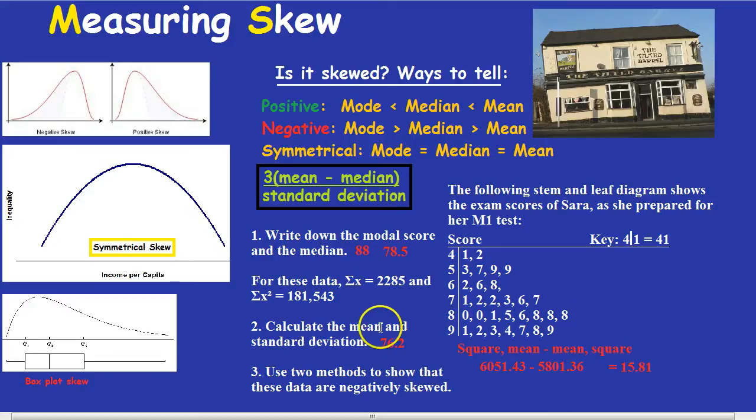Okay, almost there. We've calculated the mean and the standard deviation. That was good practice. Use two methods to show that these data are negatively skewed. First, we can just visually see it, but that wouldn't count as a quantitative answer. So what are we going to have to do? Well, notice the mode was the biggest, followed by the median. So there we are. There's our first method. We're using this formula here for negative skew, which you can write down in your answer. Mode greater than median, greater than mean. That's one demonstration that it's negatively skewed.